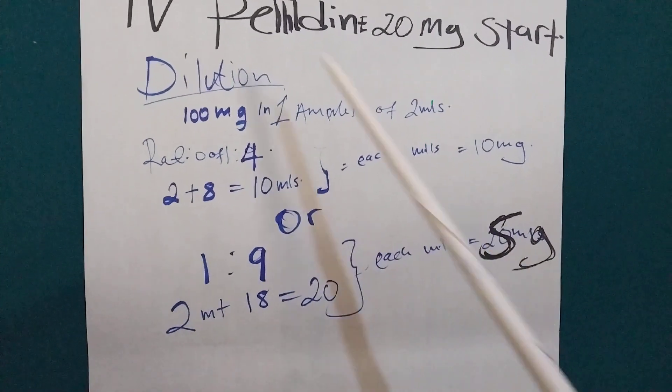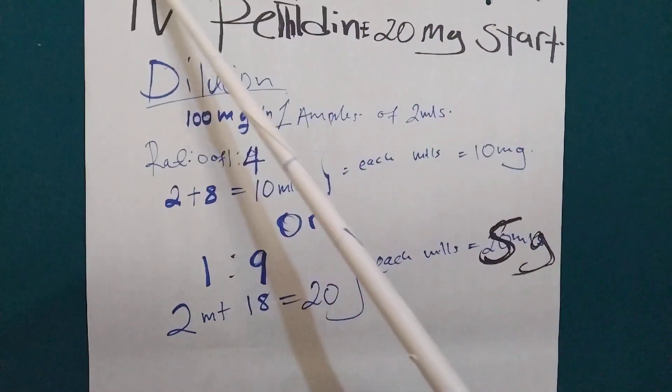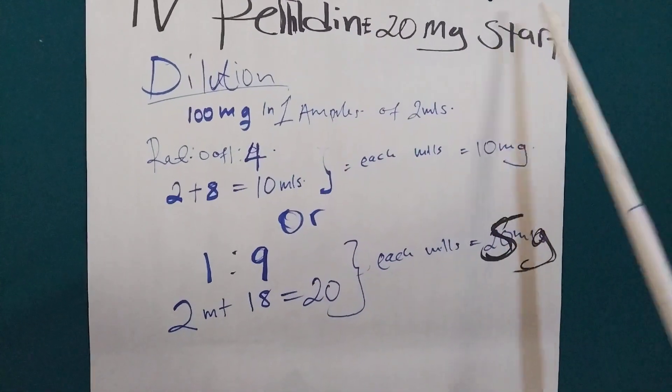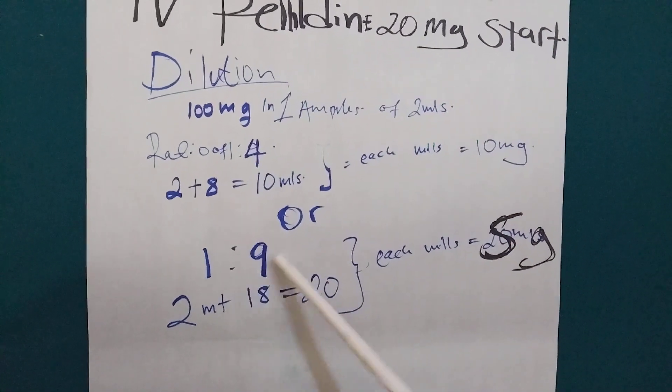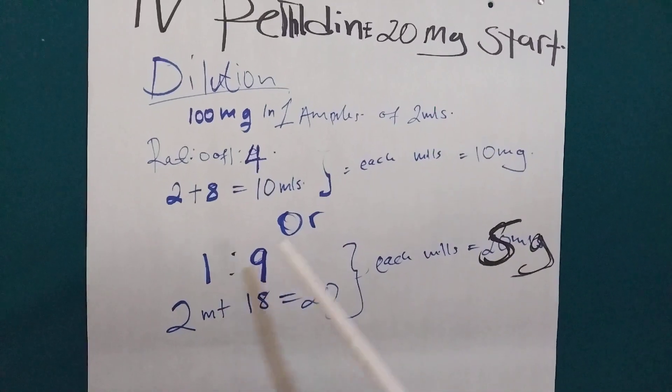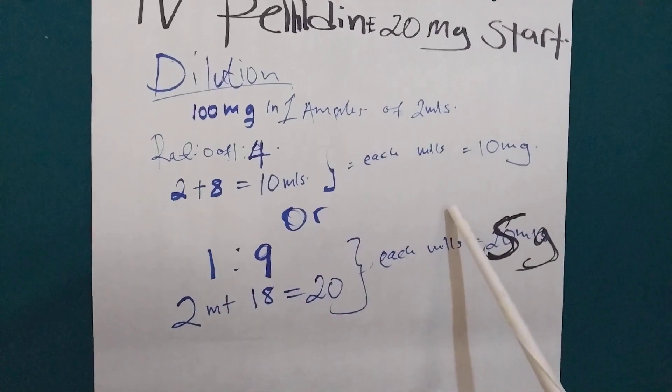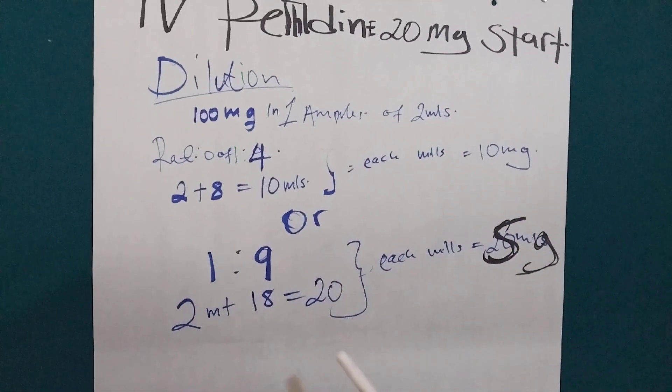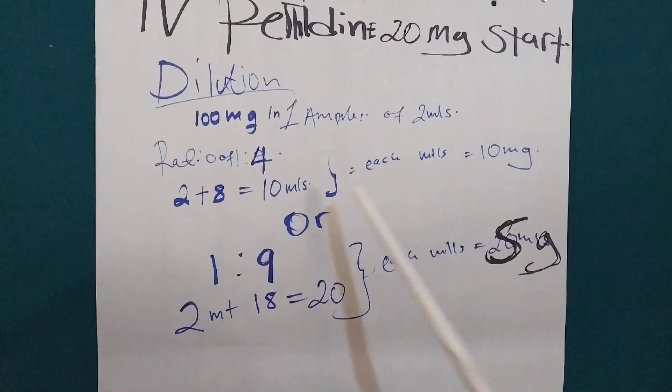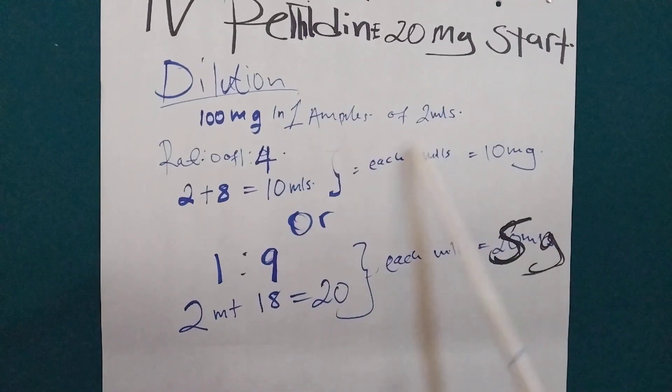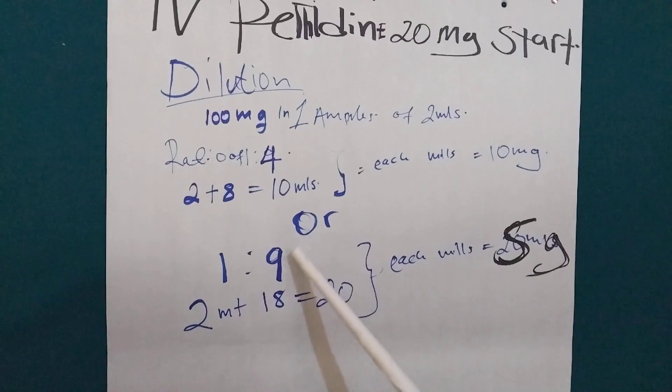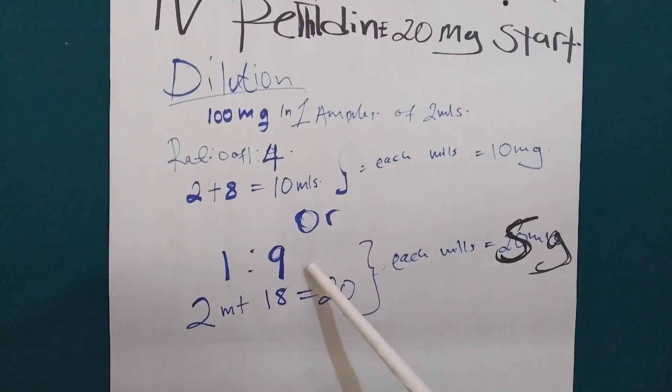Or if we are giving to a young child, some doctors will tell you how to dilute this. They will use the ratio of 1:9. So, what we are going to do, we are going to aspirate 1 mL of Pethidine and 9 mL of water for injection or normal saline.